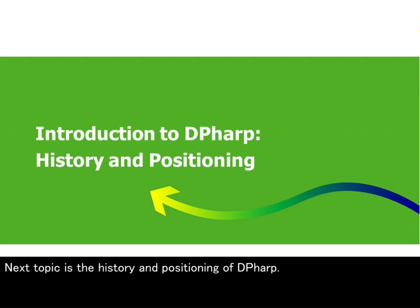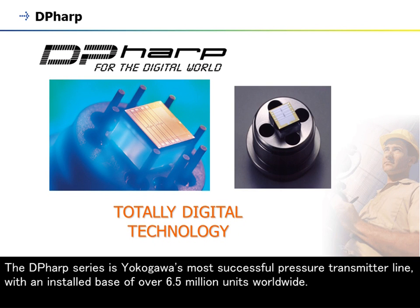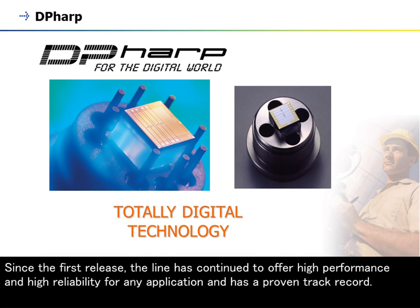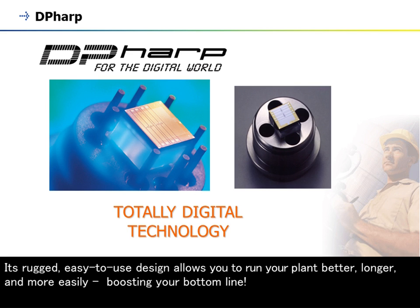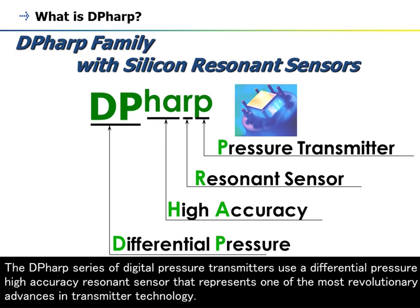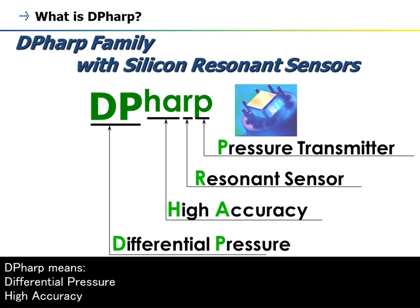The DP-HARP series is Yokogawa's most successful pressure transmitter line, with an installed base of over 6.5 million units worldwide. Since the first release, the line has continued to offer high performance and high reliability for any application with a proven track record. Its rugged, easy-to-use design allows you to run your plant better, longer, and more easily. DP-HARP stands for Differential Pressure, High Accuracy, Resonance Sensor, Pressure Transmitter.